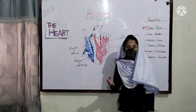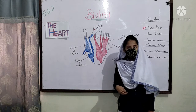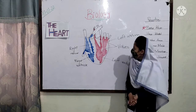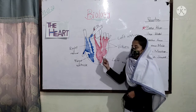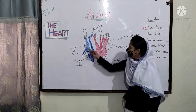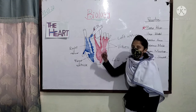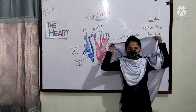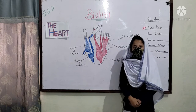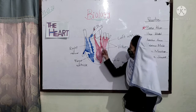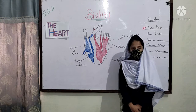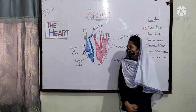The ventricles push the blood to the body parts and lungs. The blood from body parts enters the right atrium because it is deoxygenated blood, and the blood from the lungs enters the left atrium because it is oxygenated blood.